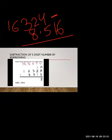Next, we subtract the tens place digits. The tens digit was 2, but it was cut and became 1 because it gave one to the unit place. So now we have 1 minus 1, which equals 0. We write 0 in the tens place.